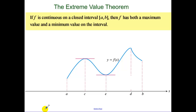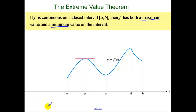Extreme Value Theorem: if we have a continuous function on a closed interval, then our function is going to have both a maximum value and a minimum value. Because if I have a closed interval — a set amount of x values — I'm going to have an absolute max and I'm going to have an absolute min.